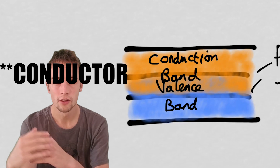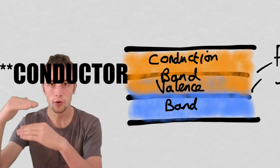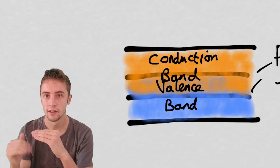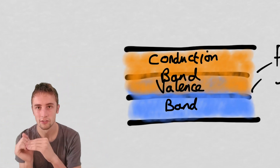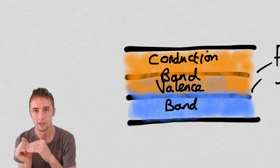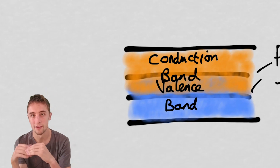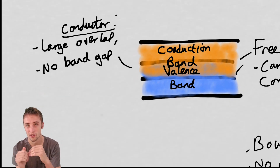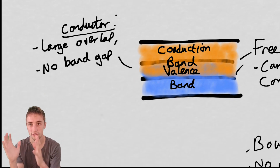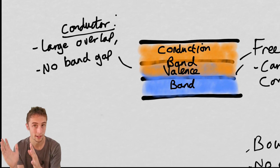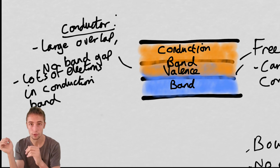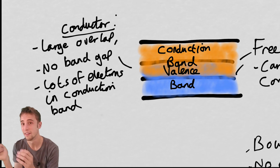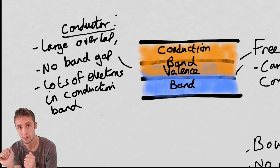In a conductor, the two bands overlap. Because of this, it doesn't take much to get these electrons up into the conduction band and free to move through the entire structure. So there are a lot of electrons in the conduction band able to take part in conduction, and therefore it's a conductor.